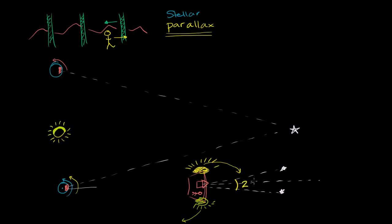The reason why I call it two times theta, we could call theta the angle relative, or the angle between the star and being straight up. So this would be theta and that would be theta. I care about that because if I know theta, and if I know the distance from the earth to the sun, I can then use a little bit of trigonometry to figure out the distance to that star.